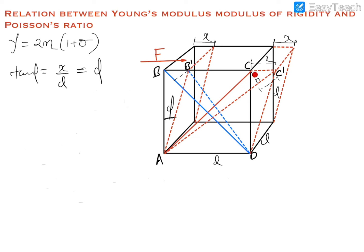The face diagonal has an original length of root 2L and is elongated as the upper face displaces. This elongation in the face diagonal is x dash. For small angles, both the relevant angles will be the same, so we can say that x dash equals x cos 45°, which gives x dash equal to x divided by root 2.